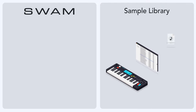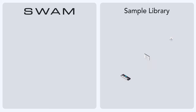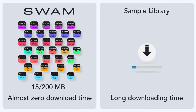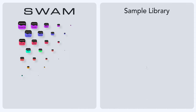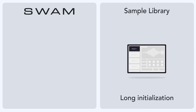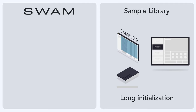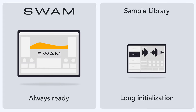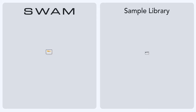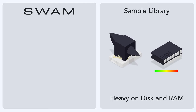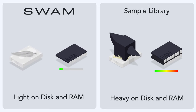Sample instruments use sample libraries, which are large collections of recordings, one of which is triggered each time you press a key. When you buy a sample library, it can take hours to download. With SWAM, you download only 15 to 200 megabytes, which takes just seconds. Long load times are a problem again when you select a preset for a sample instrument, because initializing the preset requires loading all of its samples for the different articulations at various dynamic levels into RAM. SWAM does not require any preloading to put all of an instrument's articulations at your fingertips right away. Preloading all those samples for a preset of a sample instrument demands a huge amount of RAM, as well as disk storage. SWAM's RAM and hard disk footprints are only a fraction the size.